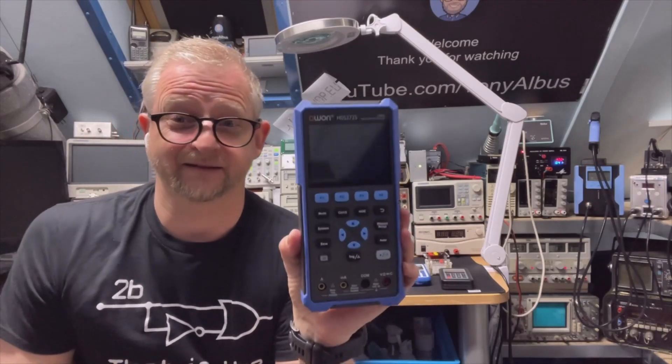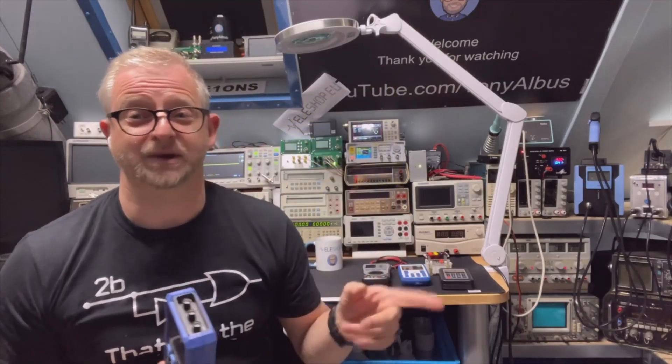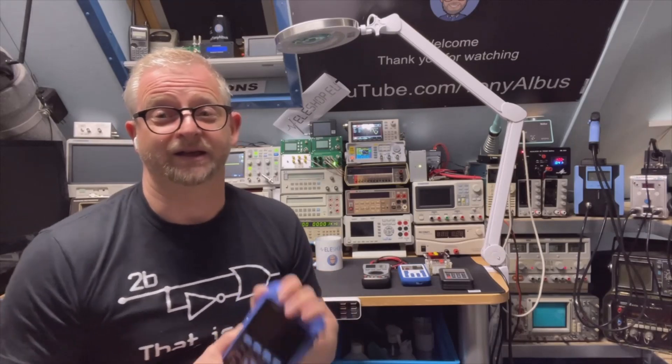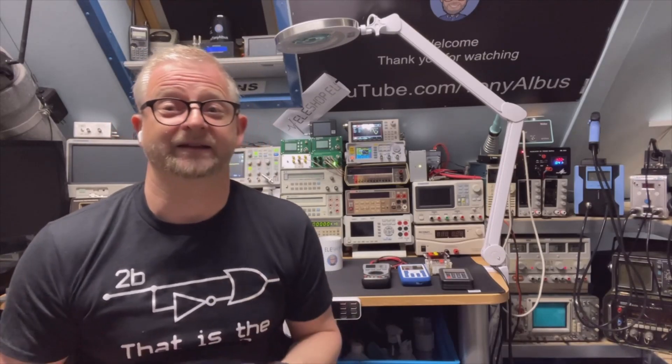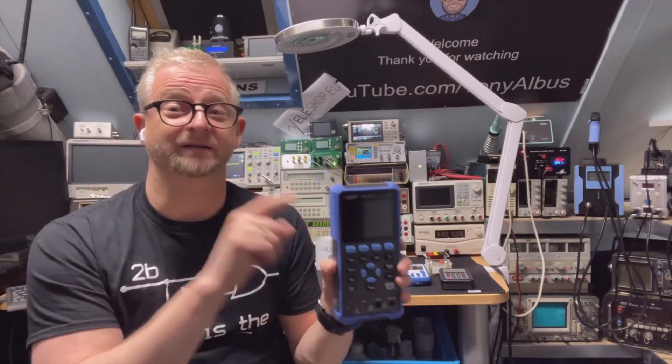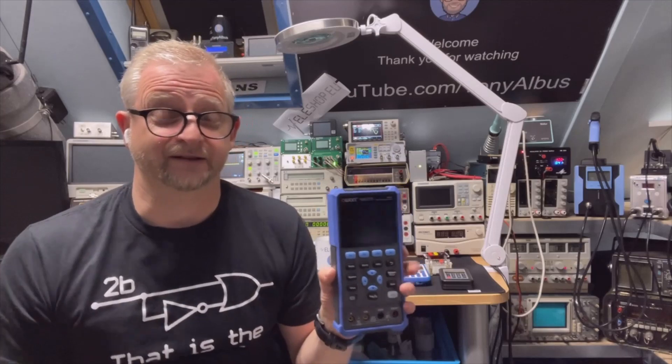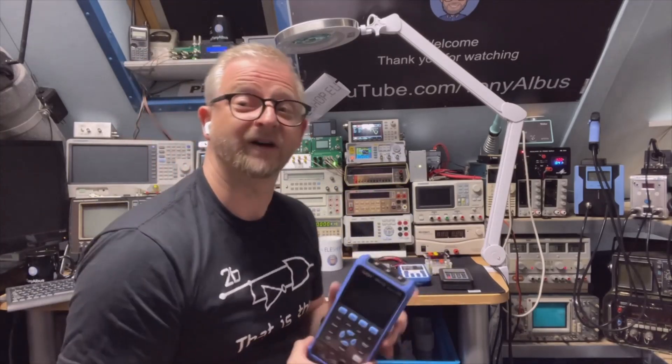This is the highest model. There are four types: the first one is 40 megahertz oscilloscope, the second one is an oscilloscope and signal generator, then the 70 megahertz, and then this one - the 70 megahertz including the signal generator. The signal generator of both versions go to 25 megahertz.